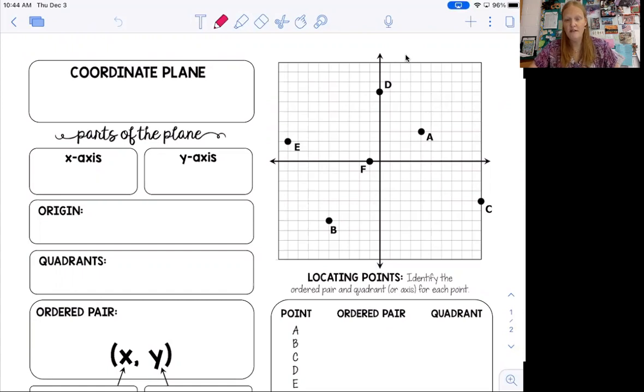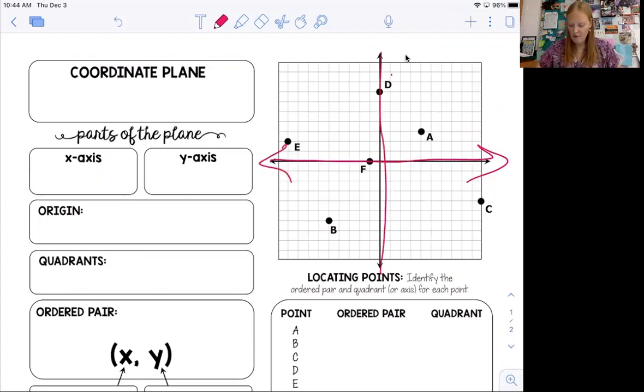The rest of this unit is going to deal with ordered pairs that are plotted in the coordinate plane, and we're going to look at lines and how steep lines are, and just get a basic introduction to linear equations. So let's talk about what the coordinate plane is. The coordinate plane is the intersection of two number lines.